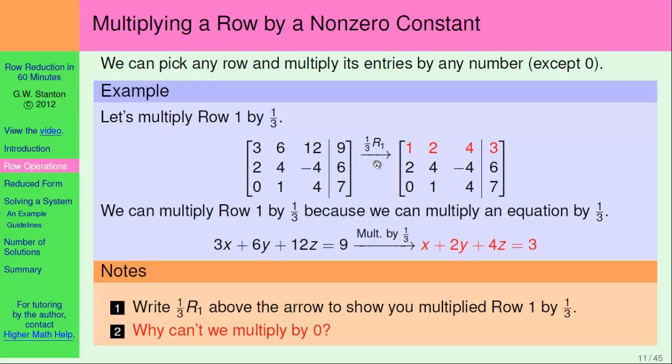Okay, and finally, as promised, why can't we multiply by zero? Well, let's think about what that would mean. Basically, it would mean eliminating an equation. So here's what I mean by that. Let's say we multiply the row by zero, everything becomes a zero.